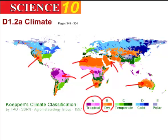The greens represent temperate climates, which are kind of moderate or in between. Famous examples include places like Europe, the eastern United States, and just a little bit on the coast of Australia.